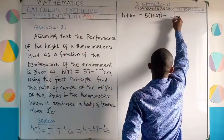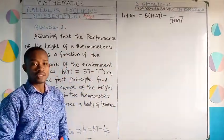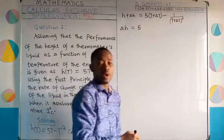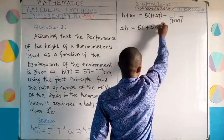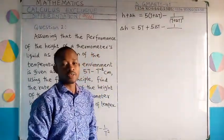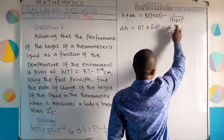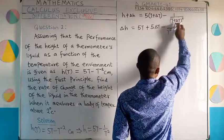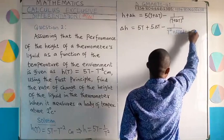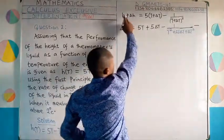Substituting, we get 5 times open bracket t plus delta t, then minus 1 over t plus delta t in bracket, raised to power 2. Making delta h the subject of the formula and expanding, 5(t plus delta t) gives 5t plus 5 delta t. The term (t plus delta t) squared expands to t squared plus 2t delta t plus delta t squared.